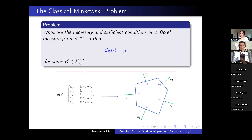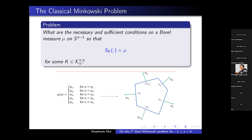This problem was posed by Minkowski himself a really long time ago. It basically asks what type of measures on the unit sphere can be the surface area measure of some convex body. Here I've drawn an example of a solution where the given data mu is discrete and concentrated on five unit vectors. Then if there is a solution, in 2D it should look like a five-sided polygon, with faces of outer unit normal u_i having surface area a_i.